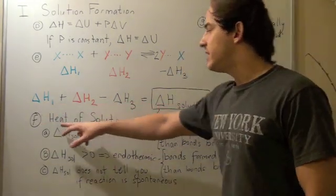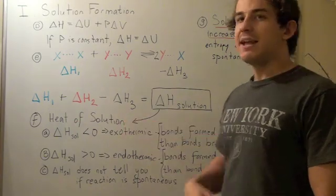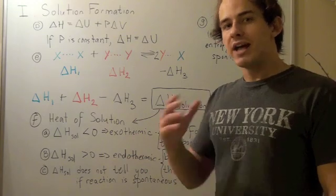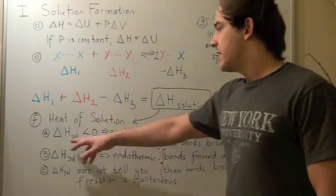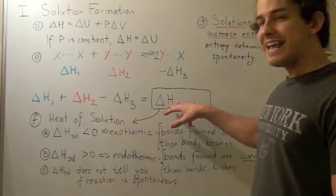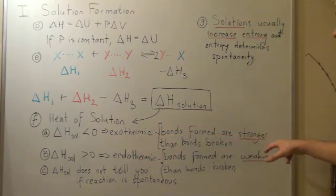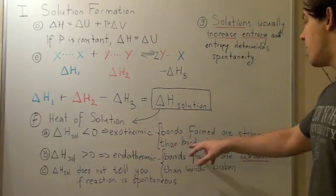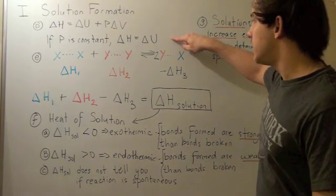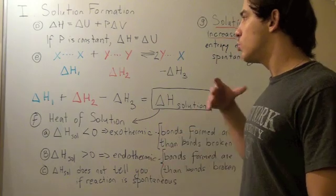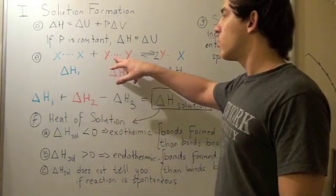Heat of solution can tell you if the solution formation is exothermic or endothermic. Now if this guy is negative, it's exothermic, and bonds formed are stronger or more stable than the bonds broken. So this bond between X and Y is greater or is stronger and more stable than that bond or this bond.